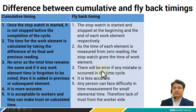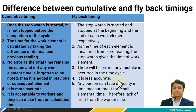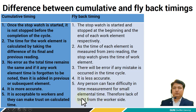In flyback timing, there will be an error if any mistake occurs in the time cycle. Cumulative timing is more accurate, while flyback timing is not as accurate. Therefore, cumulative timing is acceptable to the worker and they can trust the calculated time. In flyback timing, any person can face difficulty in measuring small elemental times, and therefore there is a lack of trust from the worker's side.